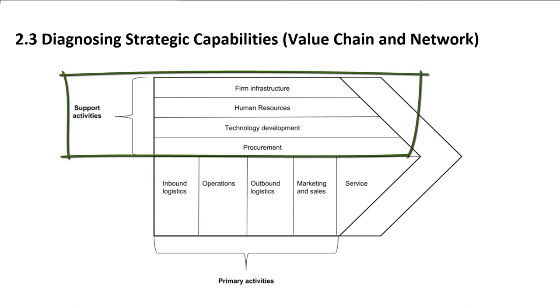Fourthly, we have infrastructure. The formal systems of planning, finance, quality control, information management, and the structure of the organization.